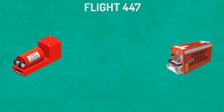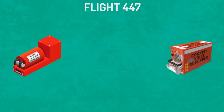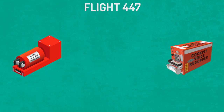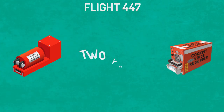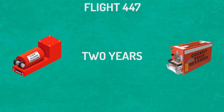In the case of Flight 447, black boxes were able to give us a tragic yet important insight into what caused the massive Airbus to plummet into the ocean. With this information, we can understand what went wrong and how we can ensure it doesn't happen again. Without the CVR and FDR, recovered two years later, it wasn't possible to prove any of this or to understand the intricate details of those final moments.